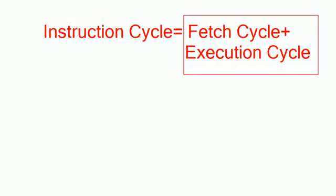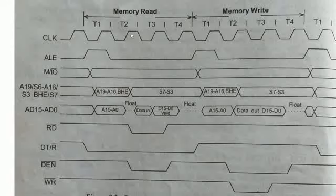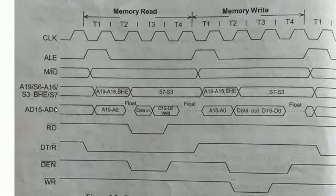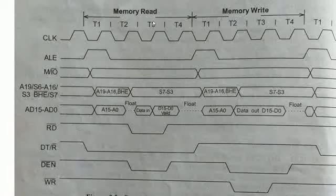Now let us look at what the bus status is when the microprocessor is performing the memory read operation or write operation. To understand these concepts, pause the video and recollect information related to ALE, M/IO bar, BHE/S7, the multiplexed lines AD0 to AD15, the RD signal, DT/R bar, DEN, and the WR signal. We will see how these signals change depending on the type of operation. I am terminating this video and will continue in the next one.